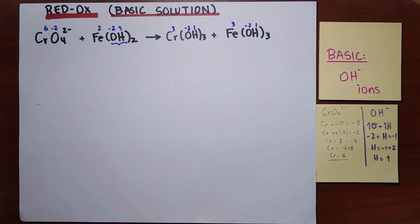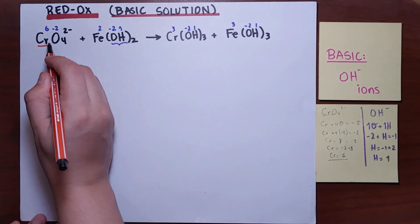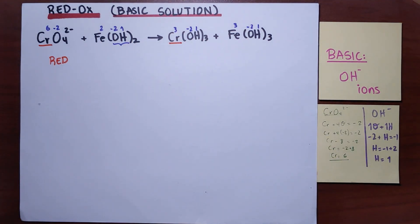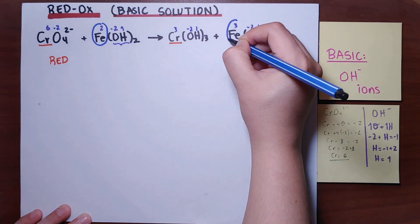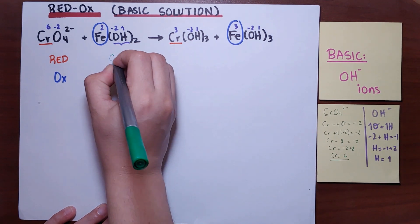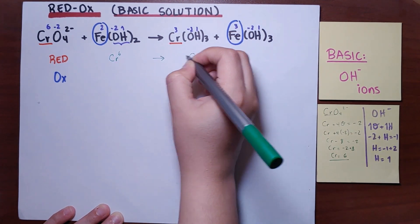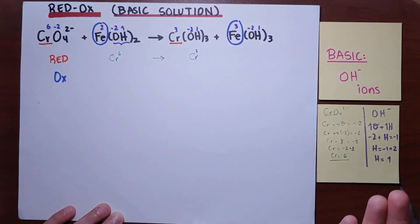Now it's time to determine what elements have been oxidized and what have been reduced. Reduction occurs for chromium, going from +6 to +3. Oxidation occurs for iron, going from +2 to +3. So we can start writing our half-reactions.